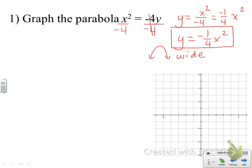Hopefully by now you recognize that when there's only the squared variable, the h for our vertex is zero, and the k — the number added or subtracted on the outside of that square — is also zero. So our vertex is actually going to be at zero, zero, and we'll go ahead and plot that on our graph.